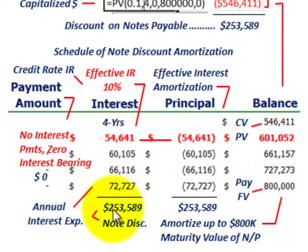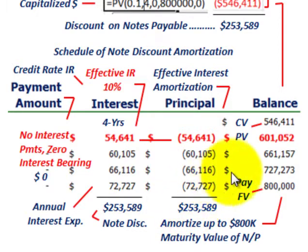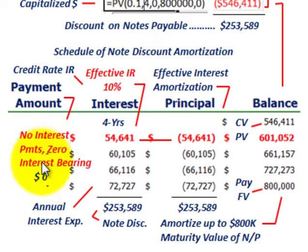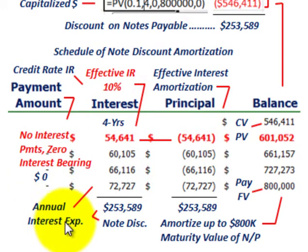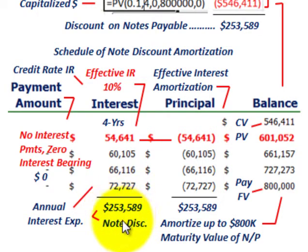The total effective interest amortized equals the discount amount of $253,589, which brings the beginning balance of $546,411 up to $800,000. With zero interest bearing notes, remember there is no cash payment. The effective interest calculated each of the four years is the annual interest expense. The total interest over the four years equals the discount amount on the note. That takes care of the amortization of this zero interest bearing note.